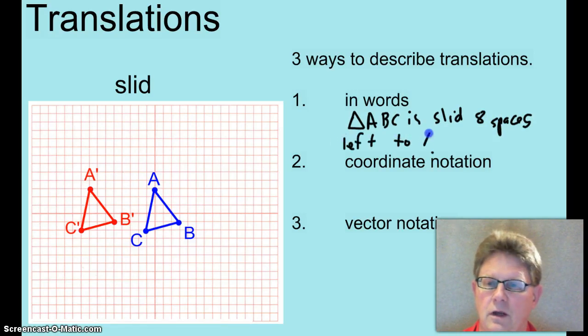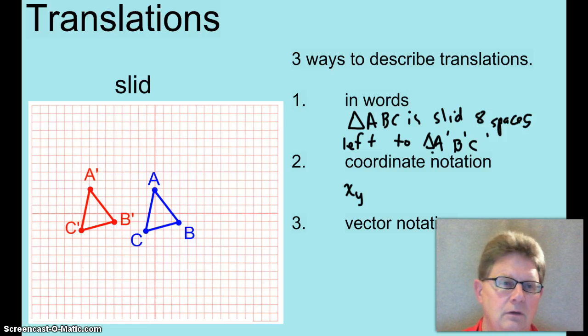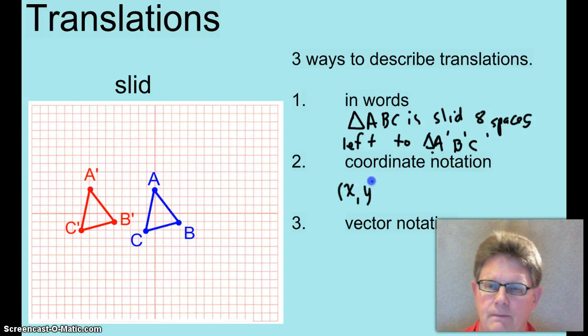To triangle A prime, B prime, C prime. So, in coordinate notation, that point again, (x,y), has been translated to (x minus 8, y).